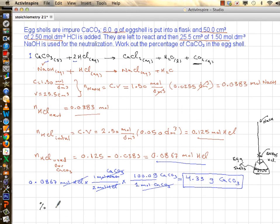So the last thing to do is to find percent. Percent is nothing but part divided by whole times 100. So it's 4.33 grams divided by 6 grams times a hundred, which is approximately 72.2 percent. So 72.2 percent of eggshell is pure calcium carbonate.